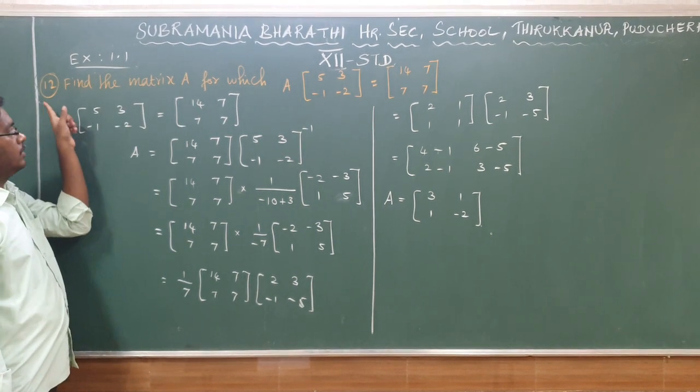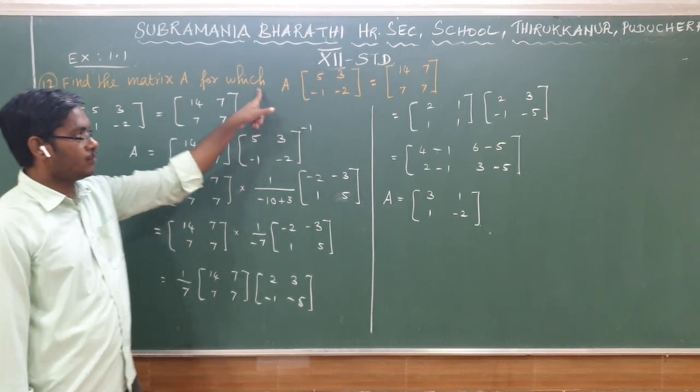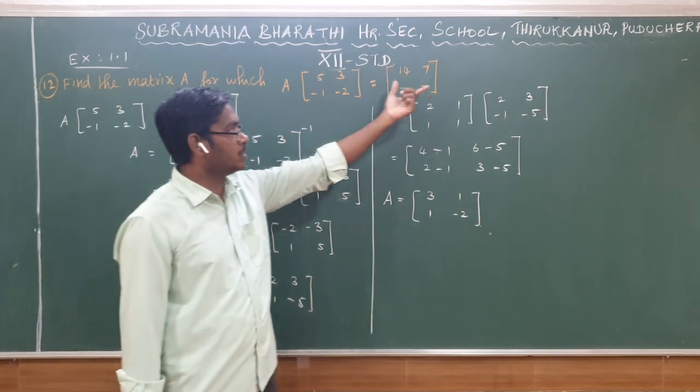Sum number 1.1, sum number 12. Find the matrix A for which A times a matrix equals the answer.